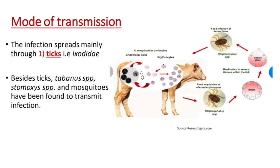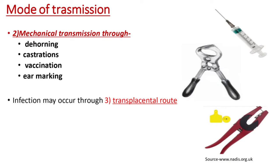What are the various modes of transmission of Anaplasmosis? The infection spreads mainly through ticks such as Ixodids. The picture on the right shows the transmission through ticks in bovine. Besides ticks, Tabanous species, Stomoxys species, and mosquitoes have been found to transmit the infection. Secondly, mechanical transmission may occur during dehorning, castration, vaccination, or ear marking, or any way where there is transfer or sharing of blood.